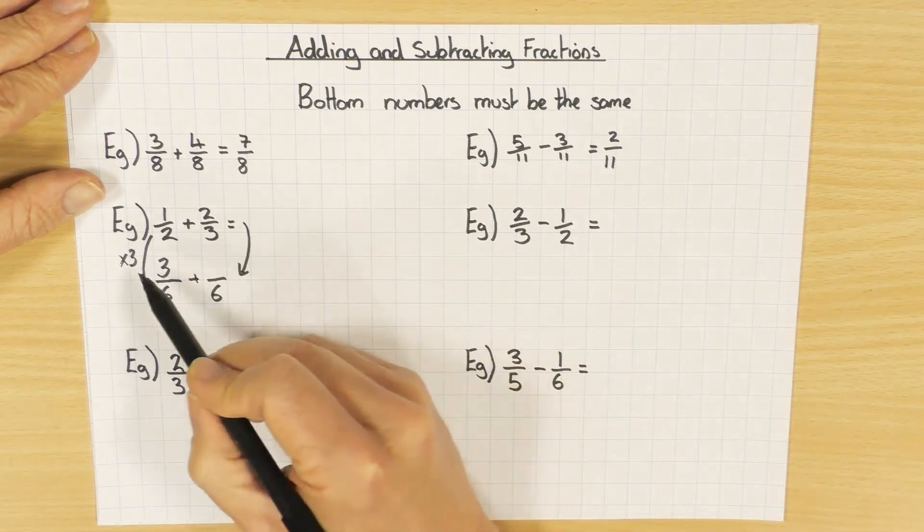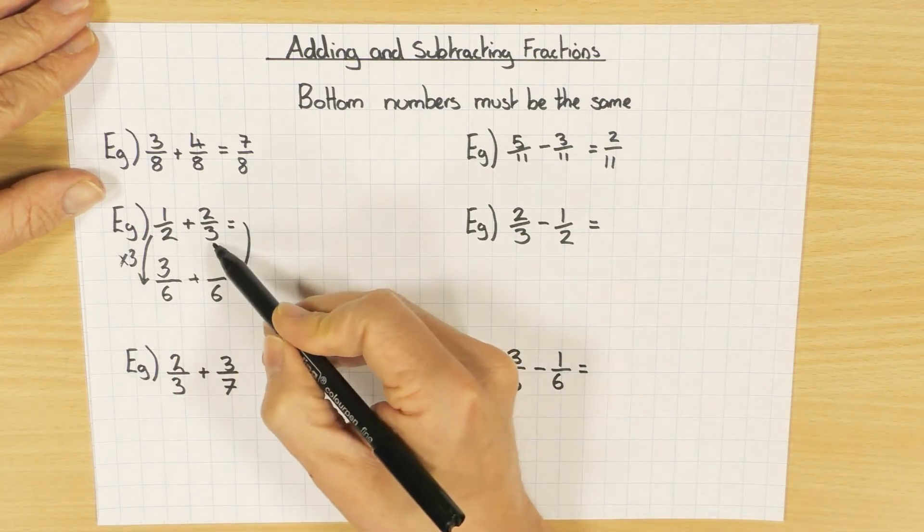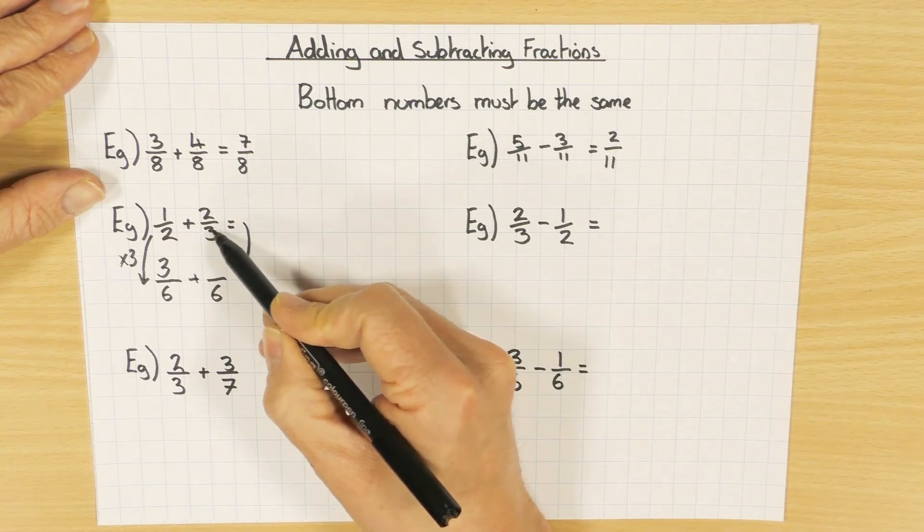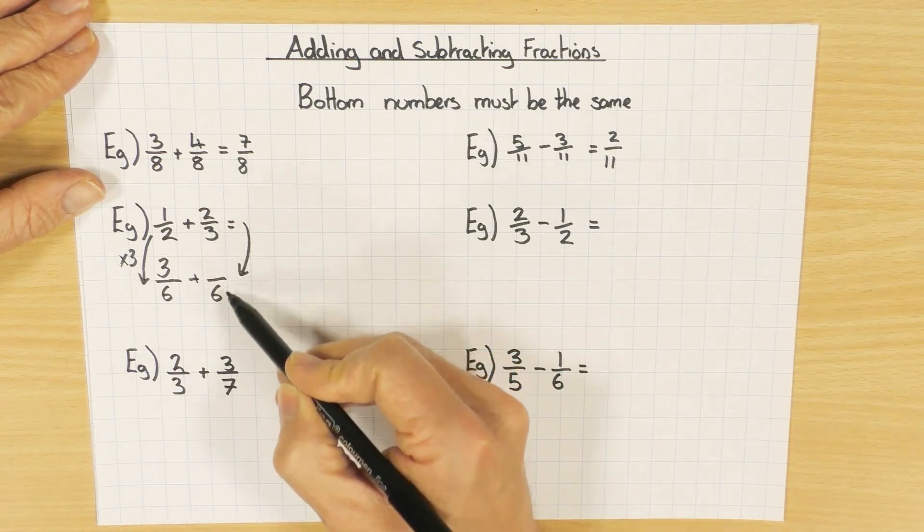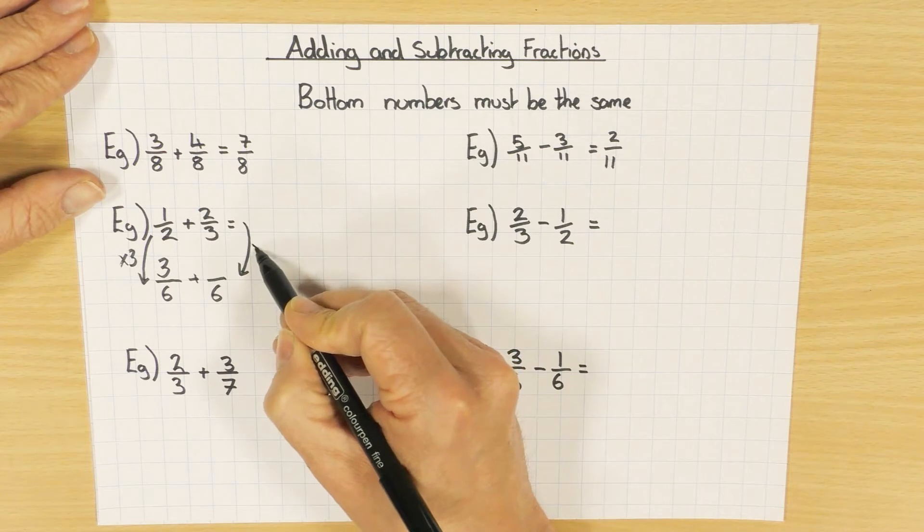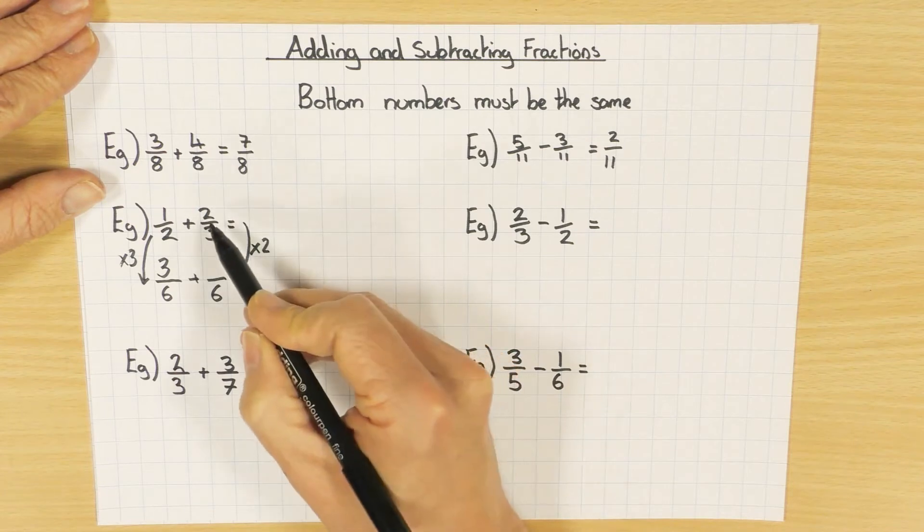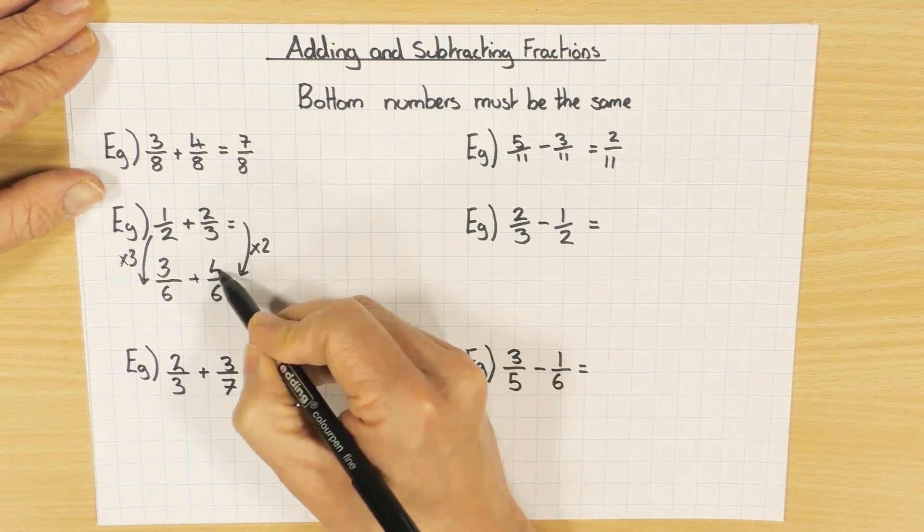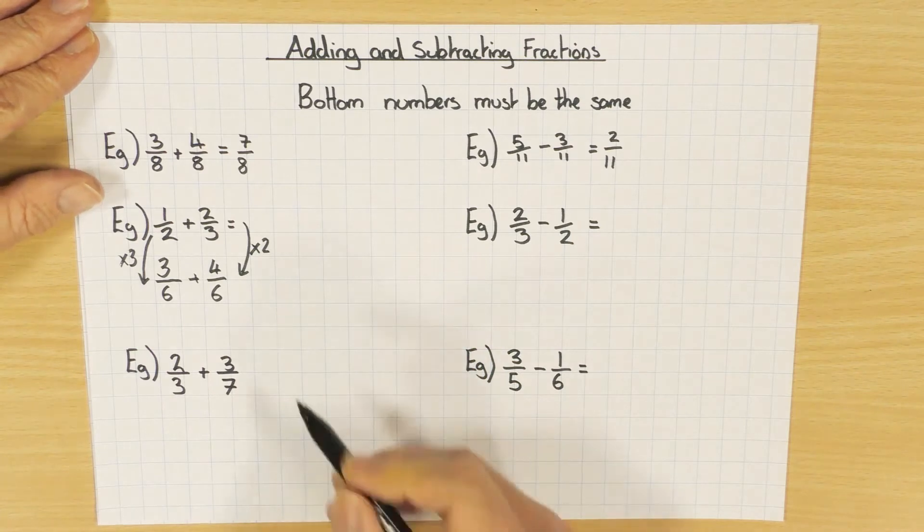Same for this one, but I won't multiply by three now because the denominator was three to start with. So three multiplied by what makes six? Obviously just two. So two times two is four. Answer: seven over six.